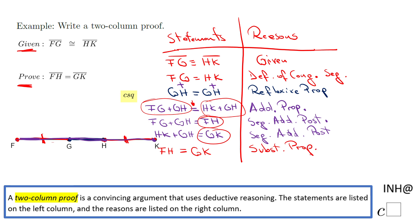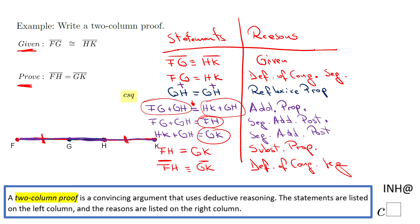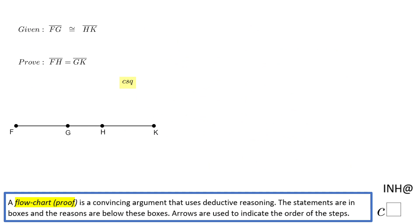One more step and we're finished. We go from this statement — which tells us the measure of the segments is the same — to: segment FH is congruent to segment GK. The reason is the definition of congruent segments. This is the two-column proof for this problem. On the next slide, we're going to do a flowchart for the same problem.